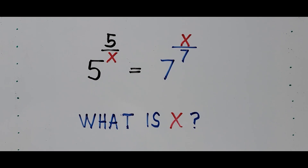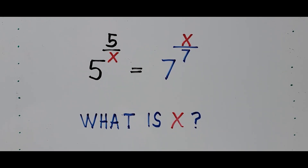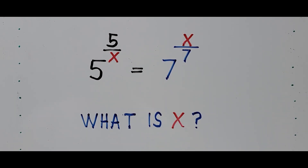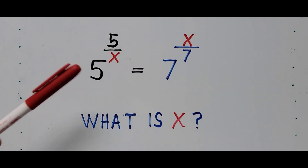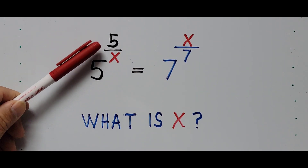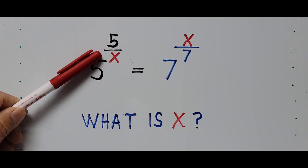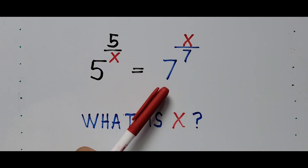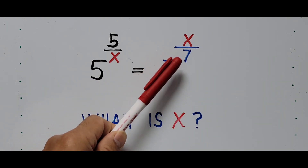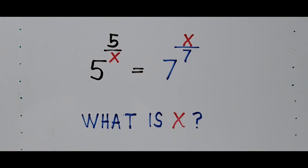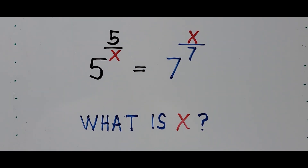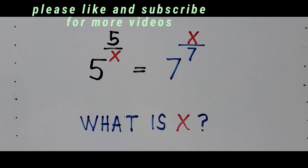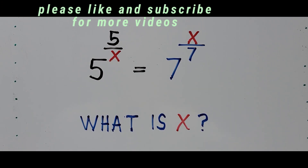Good morning everyone. Welcome to Cassiano Easy Math. Today's video is about solving another exponential equation: 5 raised to exponent 5 divided by x equals 7 raised to exponent x divided by 7, and we're looking for the value of x. And before we start, for those new to my channel, please like and subscribe for more videos.